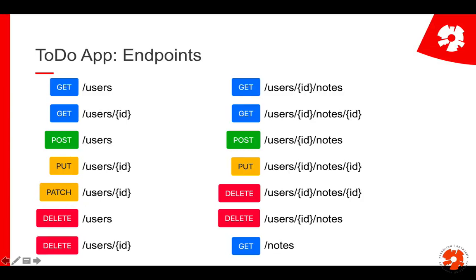PATCH is especially useful if you have large resources. Consider uploading videos — if you just want to change the metadata like the title or description, PATCH would be much better than PUT because with PUT you would have to send all the data, including the video again. This is just convention — HTTP itself doesn't enforce this difference, it's just how it's used in many RESTful applications.